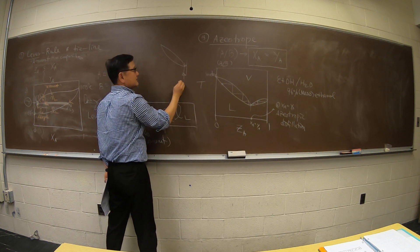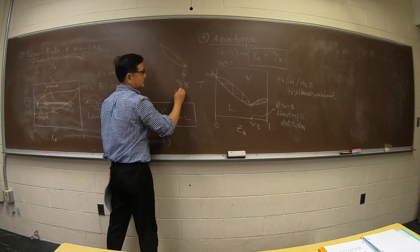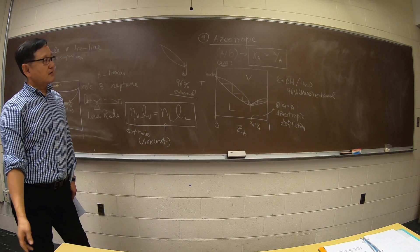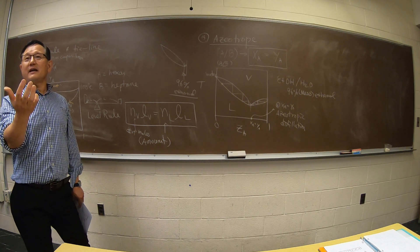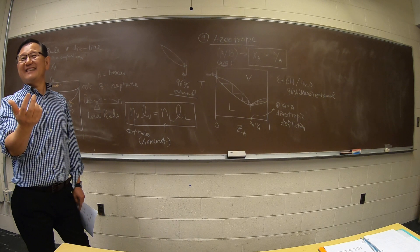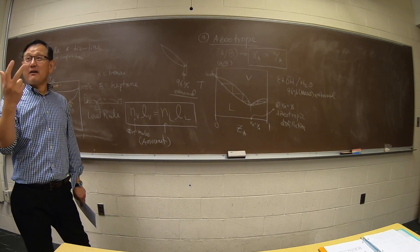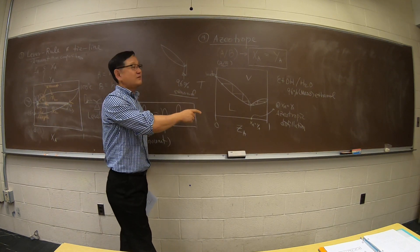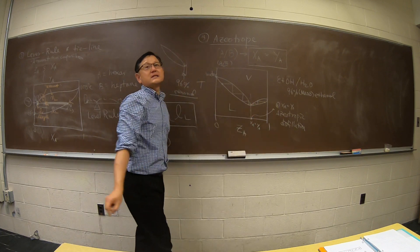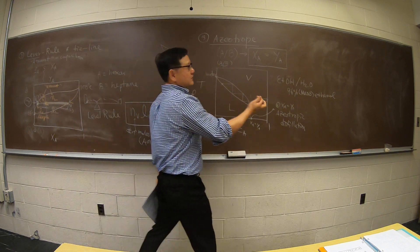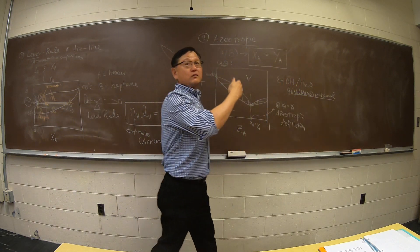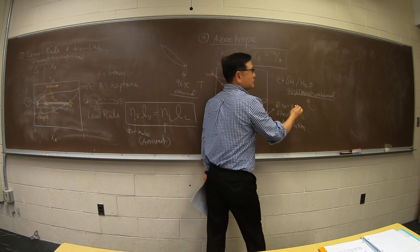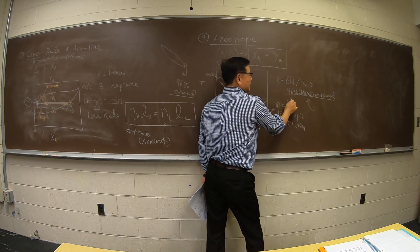If somebody wants to buy your ethanol and the purity is 95–96%, do you want to buy that? No. If you want to buy ethanol, you want 100% ethanol. And if you keep distilling 200 times, a thousand times, no matter what you do, you'll never pass this azeotropic point. So they have to do something else — distill a few times to reach the azeotropic point, and then start adding something to enhance from 96% to 100% ethanol.